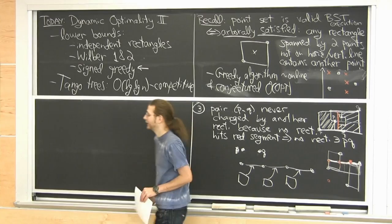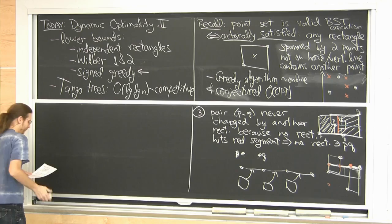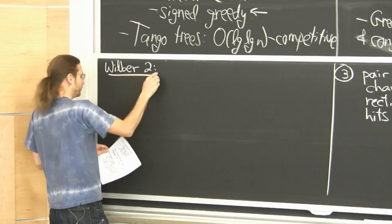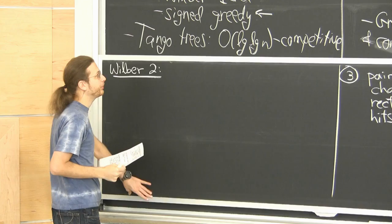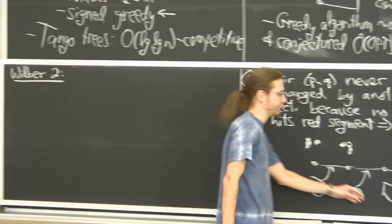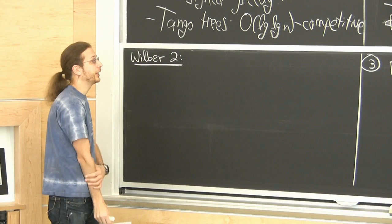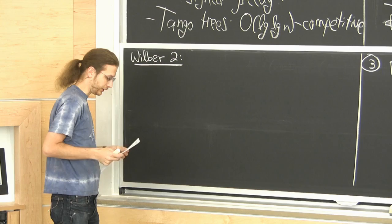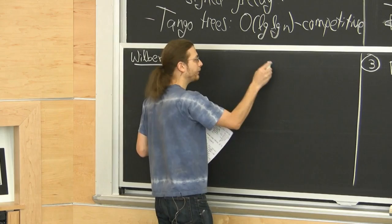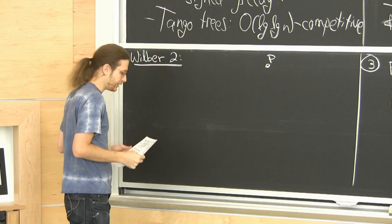Now, Wilbur 2 — named after a 1989 paper by Wilbur. I'll start with this one for pragmatic reasons. The idea: look at every input point P and look at all the points you can see from P downward. Specifically, I want points below P such that when I draw the rectangle from P to that point, it contains no other input points.